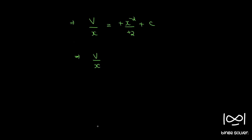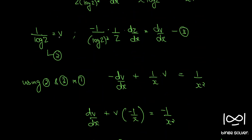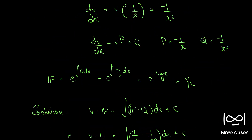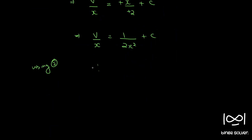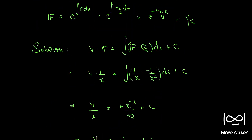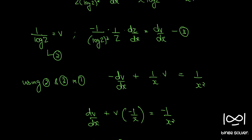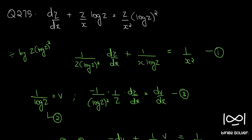Using the substitution v = 1/log(z), we have v/x equals 1/(2x²) plus c, so the final solution is 1/(x·log z) equals 1/(2x²) plus c. This is the final solution to question number 275.